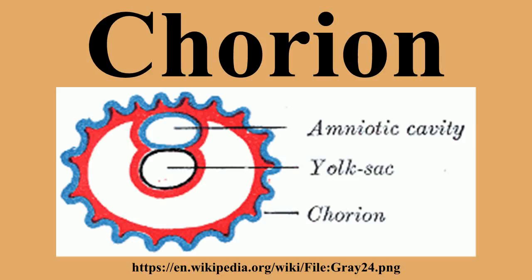In humans and most mammals, the chorion is one of the membranes that exist during pregnancy between a developing fetus and mother. The chorion and the amnion together form the amniotic sac. It is formed by extra-embryonic mesoderm and the two layers of trophoblast that surround the embryo and other membranes. The chorionic villi will emerge from the chorion, invade the endometrium, and allow transfer of nutrients from maternal blood to fetal blood.